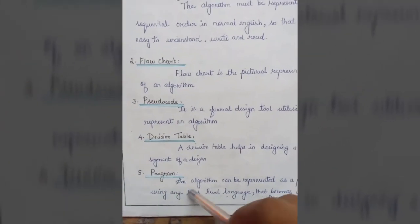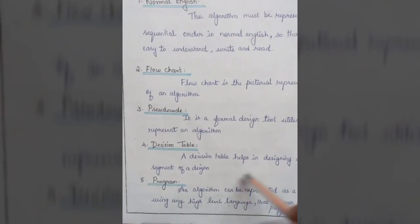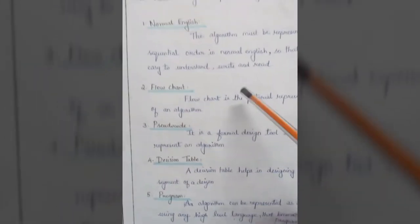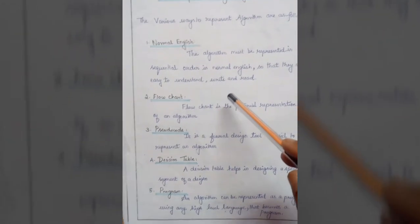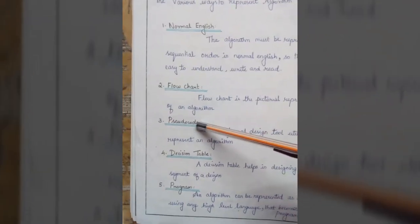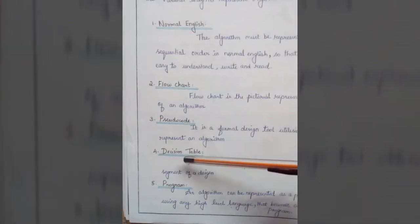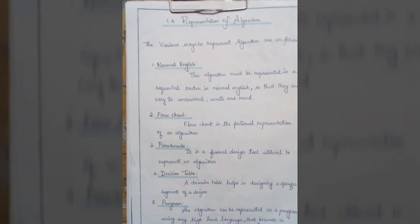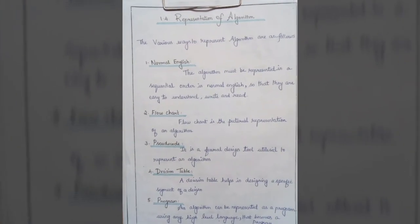Finally, an algorithm can be represented as a program using a high-level language, which becomes an executable program. So these are the five ways of representing an algorithm: normal English, flowchart, pseudocode, decision table, and program.